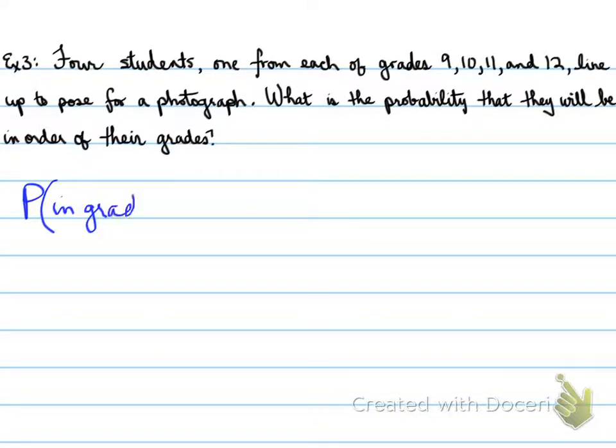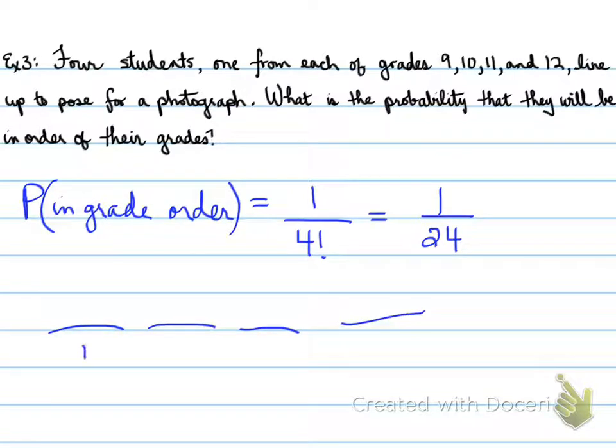Well, we have the probability of getting in grade order is equal to 1 over 4 factorial. Because, just so that you understand this, you have in four spots, so let's write this out, four spots. You have 1 in 4 chance of this picking, let's say, grade 9. What's remaining is 3, remaining here is 3, remaining here is 2, and remaining here is 1. So 1 over 4 factorial, turns out you have a 1 in 24 chance that they've lined up in the order that they appear.